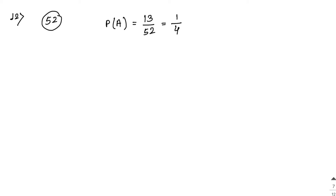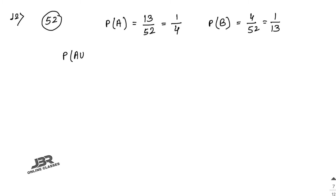The second event B is getting an ace — there are 4 ace cards, so P(B) = 4/52 = 1/13. For 'either or both' we find P(A union B) = P(A) + P(B) − P(A intersection B). We need to find the intersection: there is only one ace of spades, which is the same card for both events.